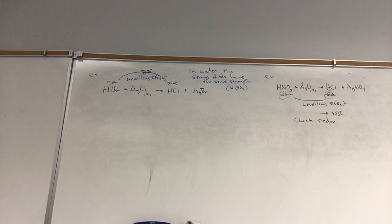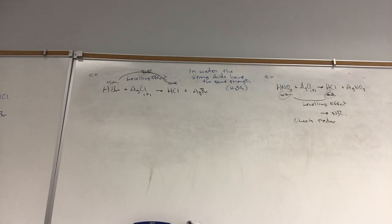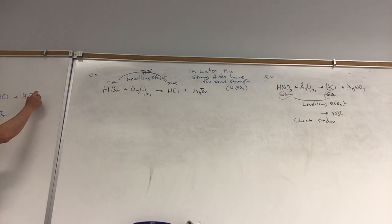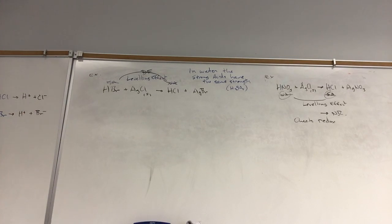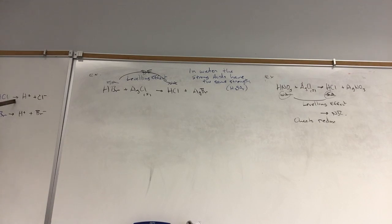The strengths of acids are dictated by how much H⁺ goes into the water. If I have one molar HCl and one molar HBr, we have to think about electrolyte properties. Both are strong electrolytes, meaning they dissociate completely. HCl dissociates completely to H⁺ and Cl⁻, and HBr dissociates completely to H⁺ and Br⁻. So if both dissociate completely, they give the same amount of H⁺.